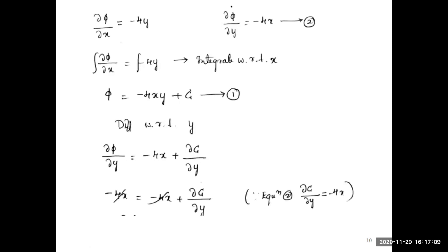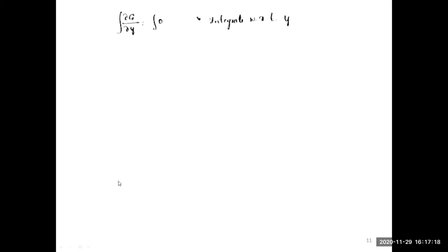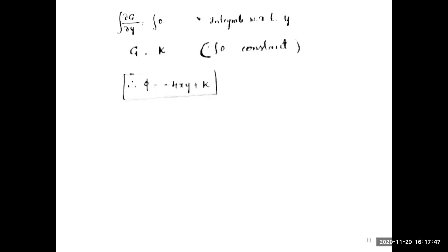We get ∂c/∂y = 0. Integrating ∂c/∂y with respect to y: the integral of 0 is a constant k. Substituting back into equation 1, the velocity potential function is φ = −4xy + k.